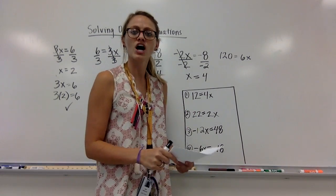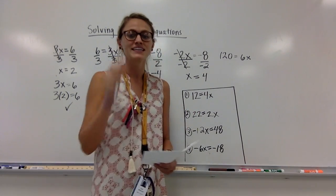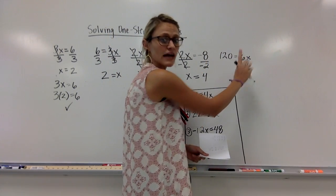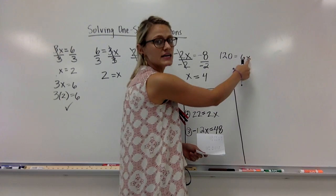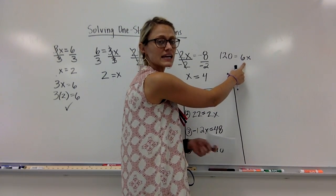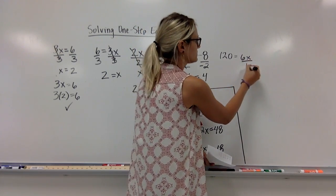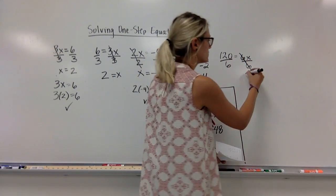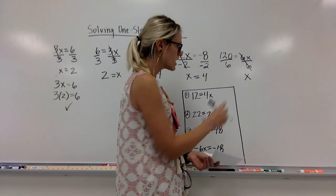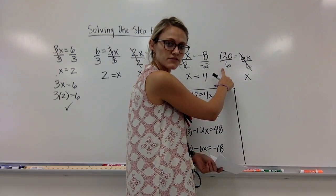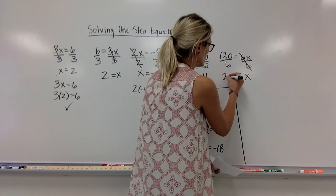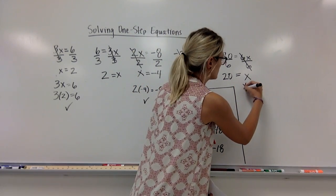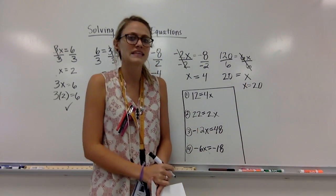Last example: 120 equals 6x. Notice I put the x on the right side — don't freak out, it's fine. So 120 is equal to 6 times x. x is being multiplied by 6, I've got to undo it by doing the opposite — divide both sides. That cancels, so I'm left with my x. 120 divided by 6 is 20. So 20 equals x, or x equals 20 — same thing.